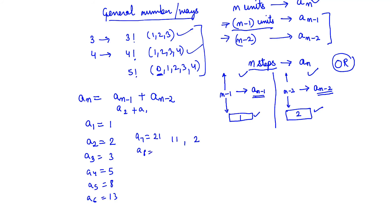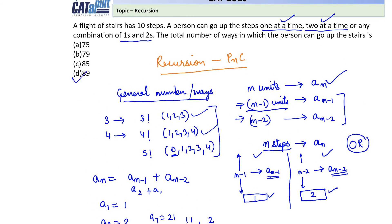a_8 is 21 plus 13, which is 34. a_9 is 55, and a_10 is 89. So that is my answer, which is option number D.